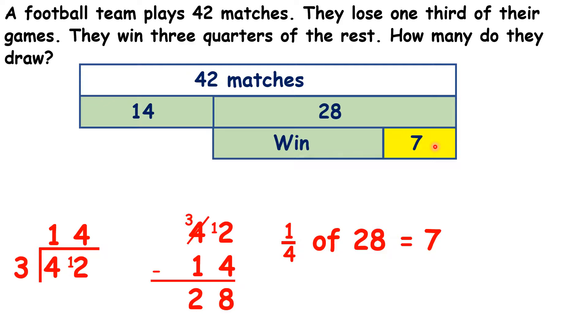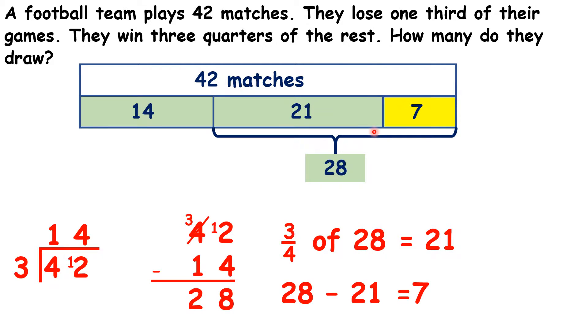Is there any other way we could represent this problem with a bar model? Is there any other way that we could solve it? Well, how about this one? Like us, they started by finding out how many games were lost, so that's 14. Then they worked out that 28 games must have either been won or drawn, but rather than using a bar for that, they used a brace around these two bars here, to show that 28 were either won or drawn.